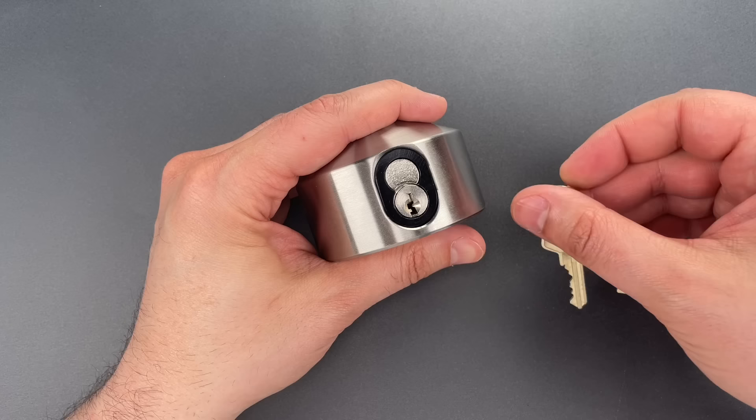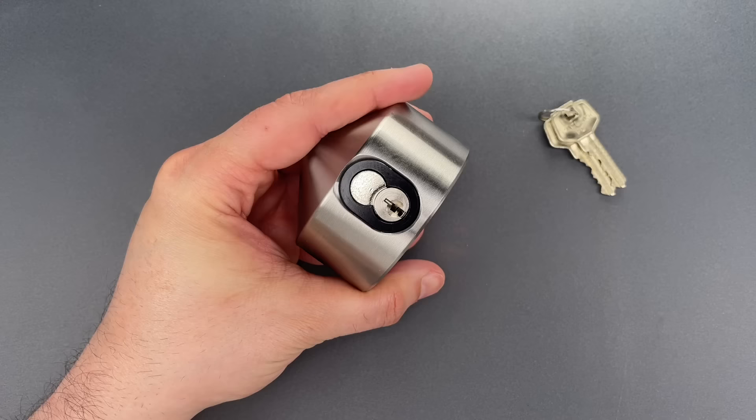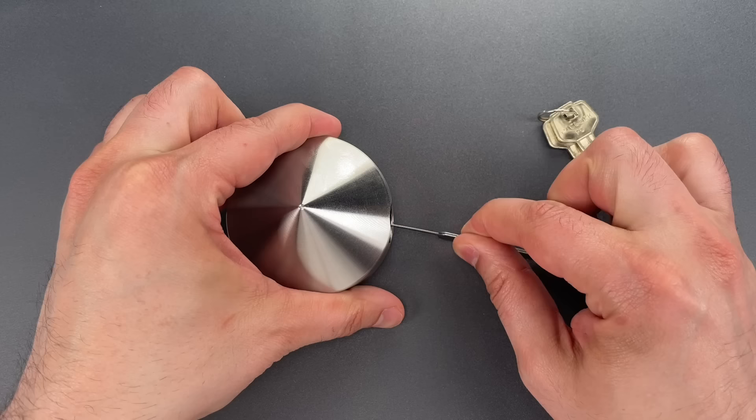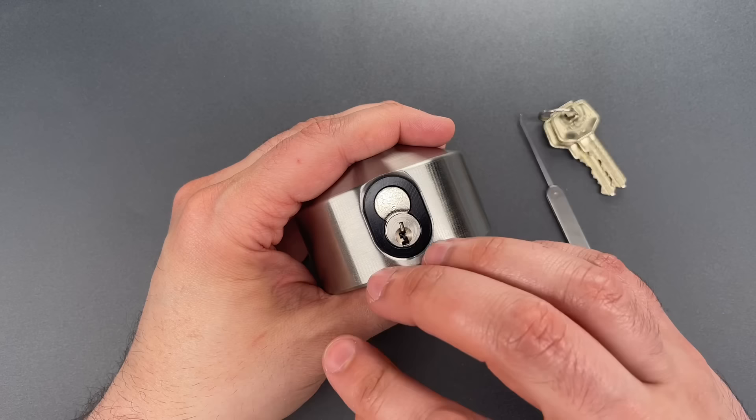Unlike almost every other one of these locks, the core is oriented in such a way that would make picking exceptionally difficult. That's because the surface to which this would be mounted would get in the way of the lock pick travel. I do have a trick to deal with that but it requires a specialized tool. I don't know if picking is what they had in mind when they set this up but it's a great example of how a minor change can have a significant impact on pick resistance.